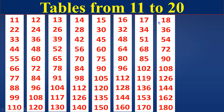18 times table. 18 ones are 18. 18 twos are 36. 18 threes are 54. 18 fours are 72. 18 fives are 90. 18 sixes are 108.